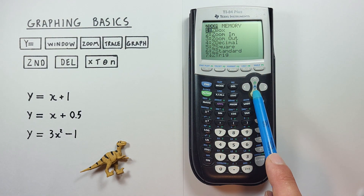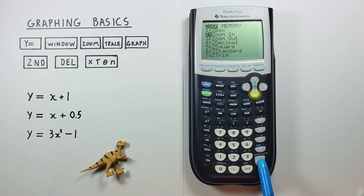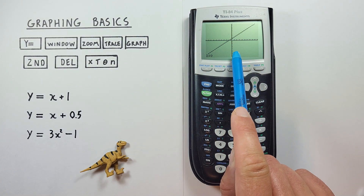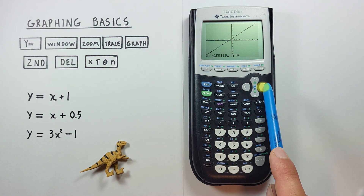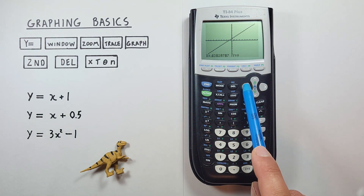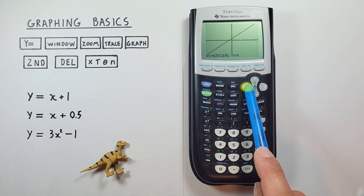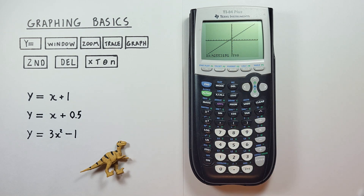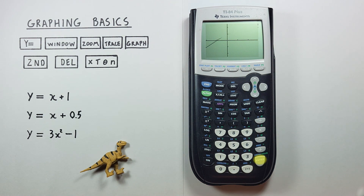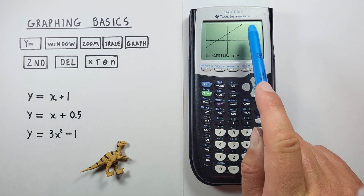We can zoom in with option 2. We press it and that puts a little cursor on our screen. That starts in the middle, but you can move around until you center it and choose where you want to zoom to. Zoom to right there, hit enter, and we see we've zoomed in right there.